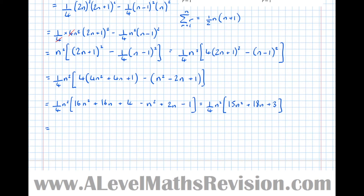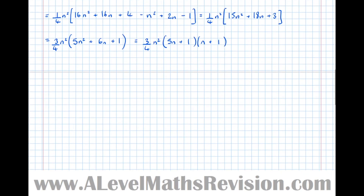Taking 3 out as a factor: equals three quarters n squared times 5n squared plus 6n plus 1. Then factorising the quadratic bracket: three quarters n squared, and 5n squared plus 6n plus 1 factorises as 5n plus 1 times n plus 1, since both numbers are 1 and all signs are plus. That gives us three quarters n squared times n plus 1 times 5n plus 1, which is the required result.